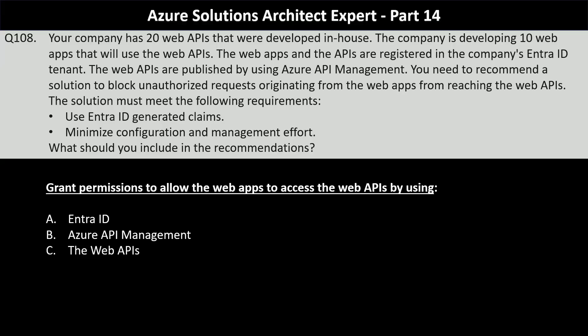Your company has 20 web APIs that were developed in-house. The company is developing 10 web apps that will use the web APIs. The web apps and the APIs are registered in the company's EntraID tenant. The web APIs are published by using Azure API Management. You need to recommend a solution to block unauthorized requests originating from the web apps from reaching the web APIs.